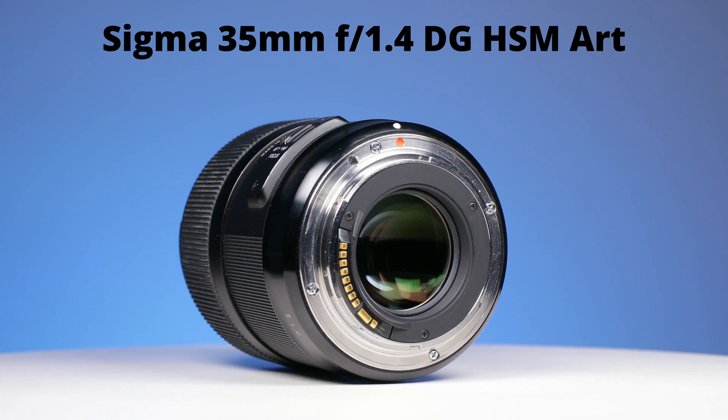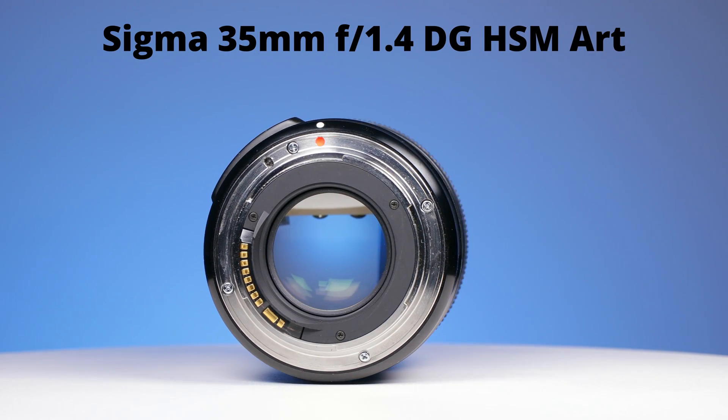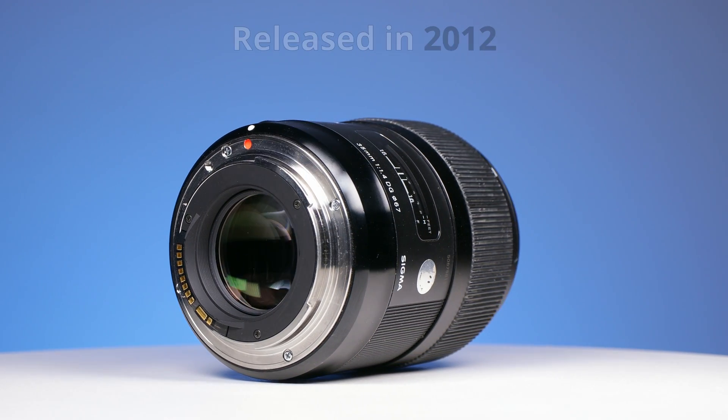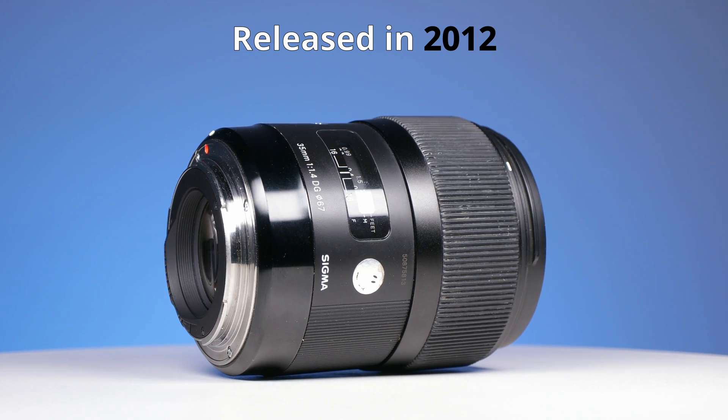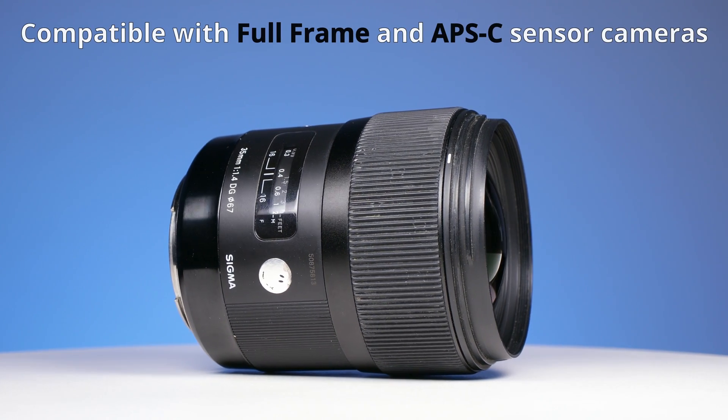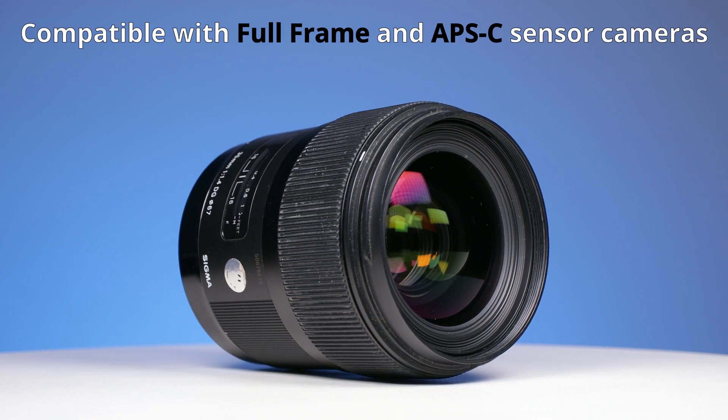The second one is the Sigma 35mm f1.4 DG HSM ART. A more recent lens, released in 2012. Same as the Canon one, it works on both full frame and crop sensor cameras.